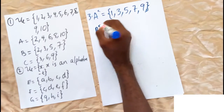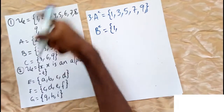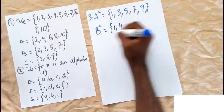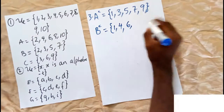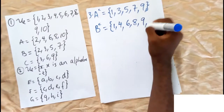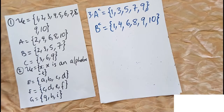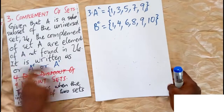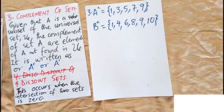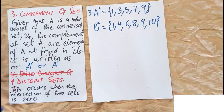For B complement: 1 is not in B, write 1; 2 is in B, skip; 3 is in B, skip; 4 is not in B, write 4; 5 is in B, skip; 6 is not in B, write 6; 7 is in B, skip; 8, 9, 10 — check each accordingly. So the complement of set A contains elements in the universal set that are not in A.